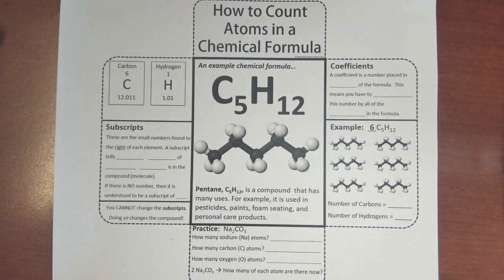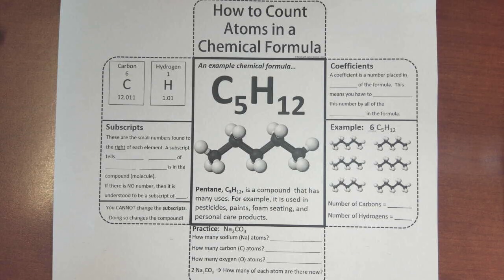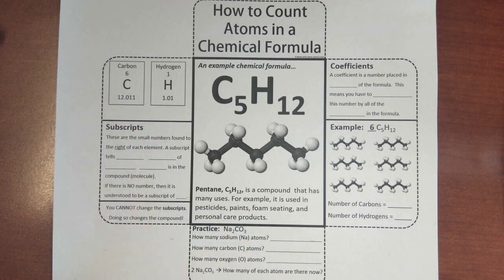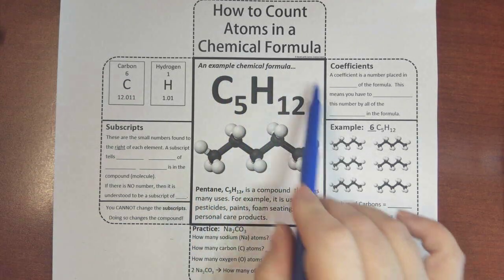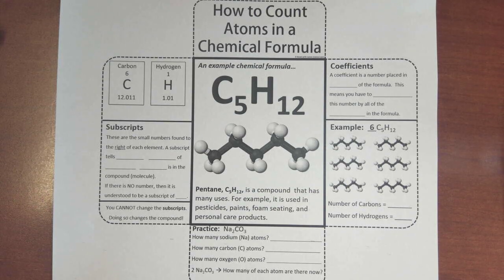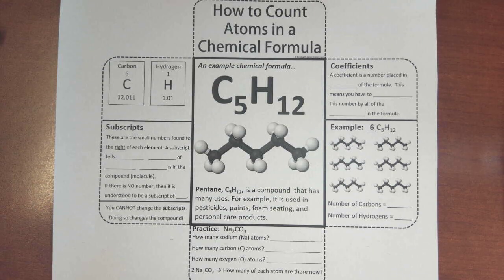We've been talking about the difference between elements and compounds. C5H12 is a compound because we see two different elements. Elements are represented by chemical symbols on the periodic table — the C represents carbon and the H represents hydrogen. When two or more elements are combined, we get a compound. C5H12 is a compound called pentane. We're going to talk about how to count the number of atoms — how many carbon atoms and how many hydrogen atoms are in this formula. The number that tells us that is called a subscript.